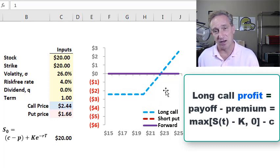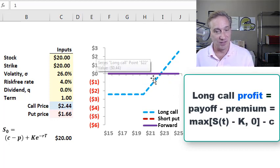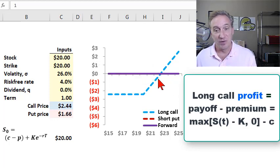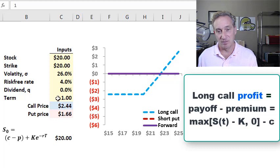On the other hand, if the future stock price is higher, then we start to enter into net profit territory. The break even is $22.44 because at a future stock price of $22.44, we would exercise for a $2.44 payoff, minus the premium we paid of $2.44, giving us zero profit.